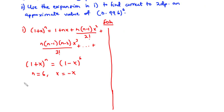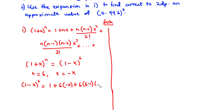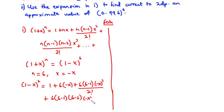The expansion for (1 minus x)^6 is: 1 plus 6 times (negative x), plus 6(6 minus 1)(negative x)^2 divided by 2 factorial, plus 6(6 minus 1)(6 minus 2)(negative x)^3 all over 3 factorial.